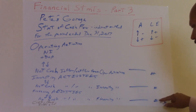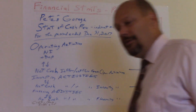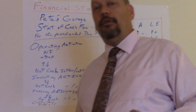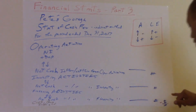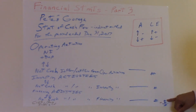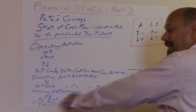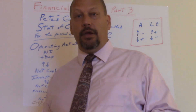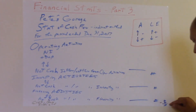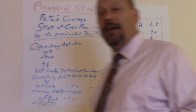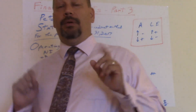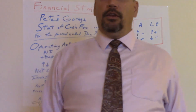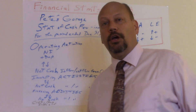Once you've applied the rules, total each section to get the net cash provided or used from operating, investing, and financing activities. Add those three subtotals together, then add your beginning cash balance from January 1st — whatever cash you had at the start of the year. That gives you an ending cash number. If that ending number matches the cash balance on your balance sheet, you did it right. You're done — you've learned the Statement of Cash Flows.